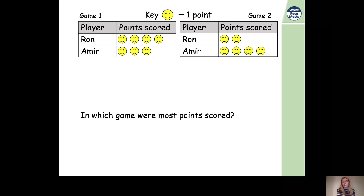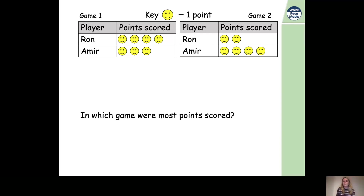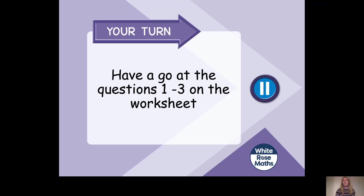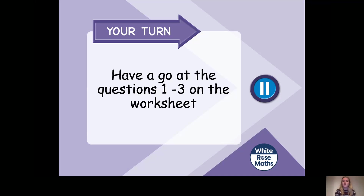Amir has four smiley faces in the second game, which equals four points. So four plus two equals six smiley faces, representing six points. We've got seven points in game one and six points in game two, so game one has the most points — fantastic, well done! Now have a go at questions one to three on your worksheet: Year Two Maths, fifth of February, resource one, then come back to the video for your last question.